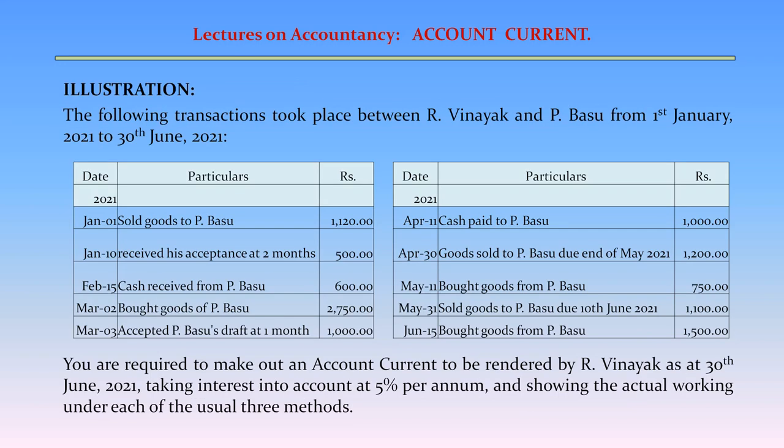Illustration. The following transactions took place between R. Vinayak and P. Basu from 1st January 2021 to 30th June 2021. January 1: Sold goods to P. Basu – Rs. 1,120. January 10: Received his acceptance at two months – Rs. 500. February 15: Cash received from P. Basu – Rs. 600.